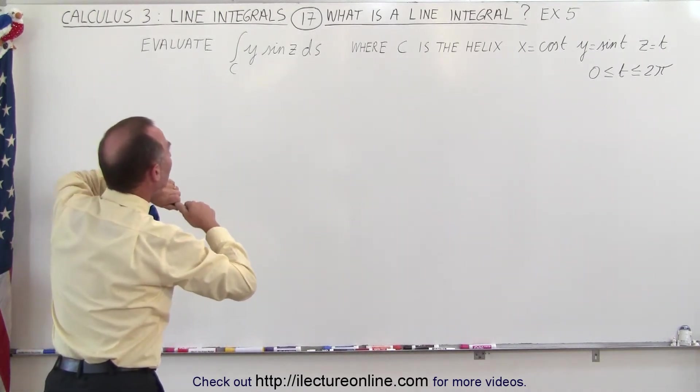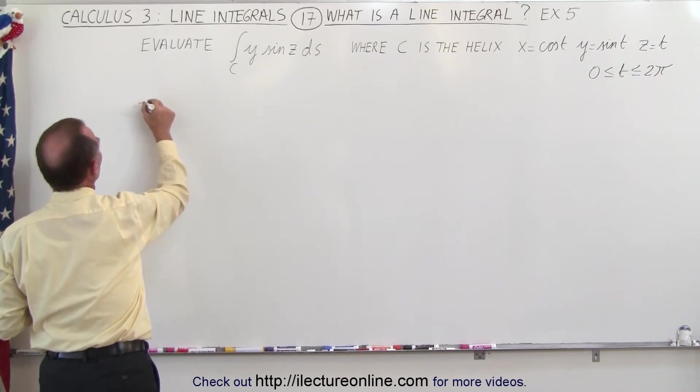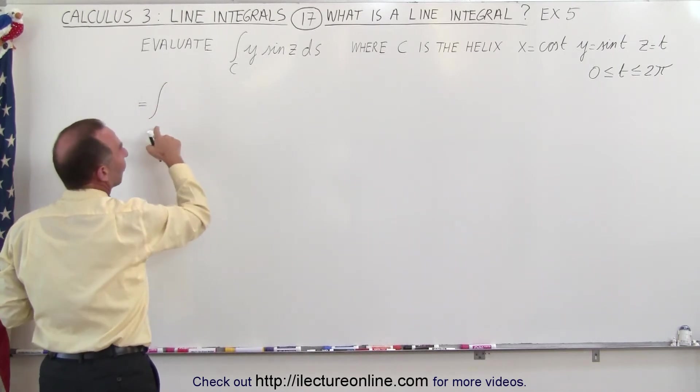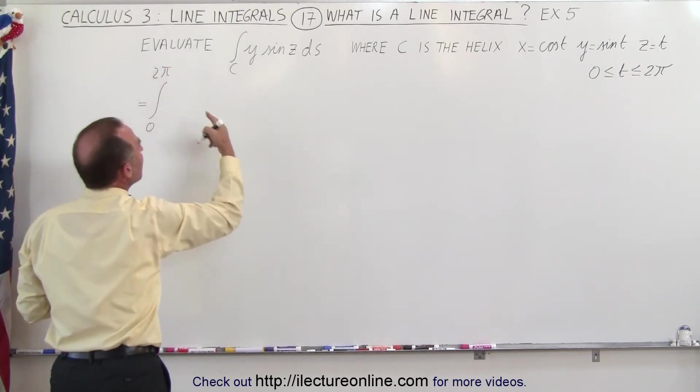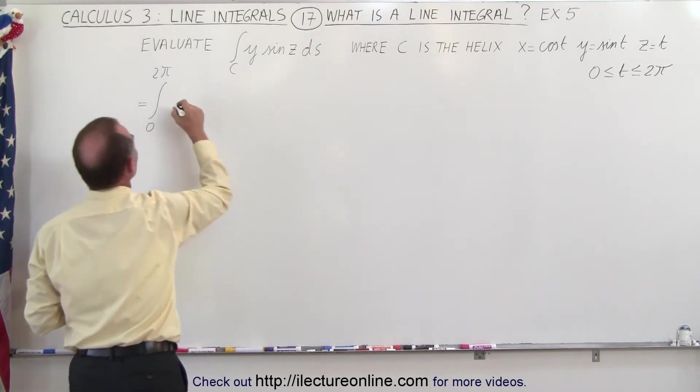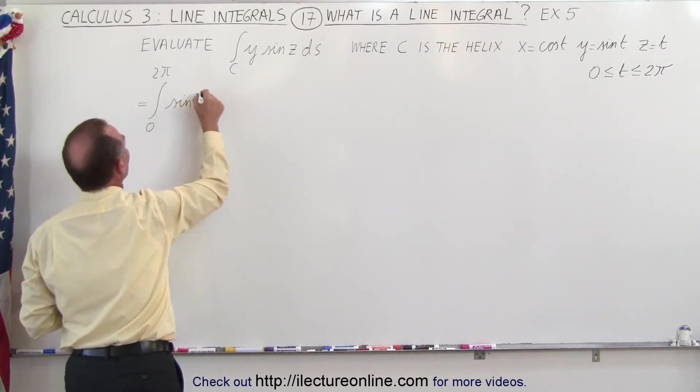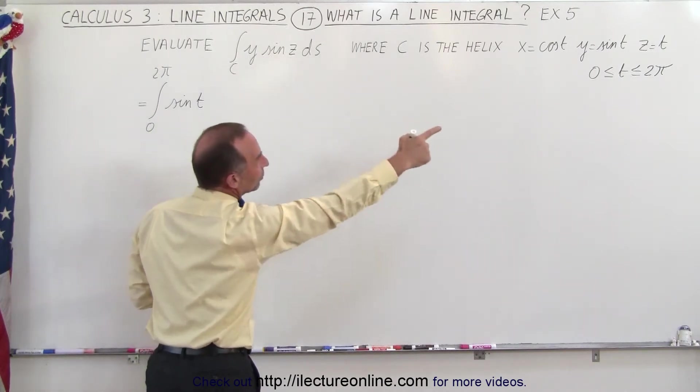Write the equation or the integral that will allow us to find the solution here. So this is equal to the integral from 0 to 2π because we're now going to be integrating over t, and y here can now be replaced by the sine of t. So we have the sine of t, and then we have the sine of z, but z is equal to t.